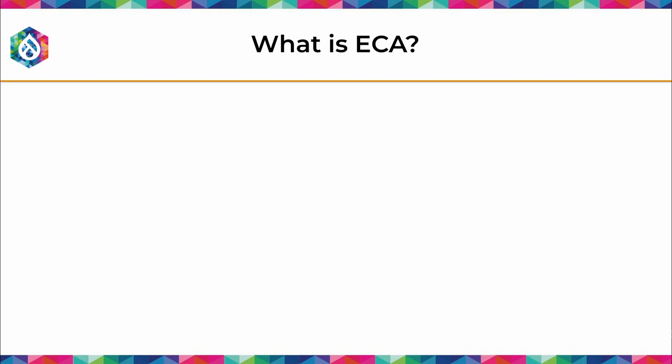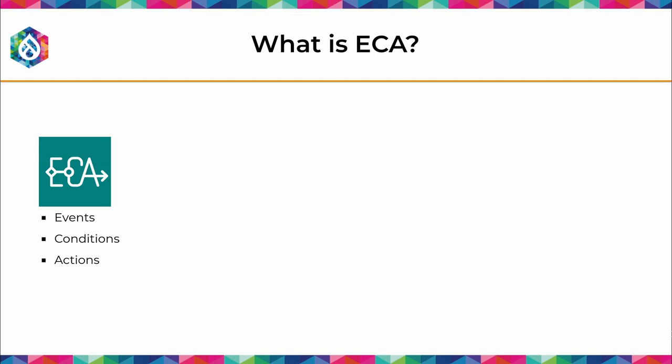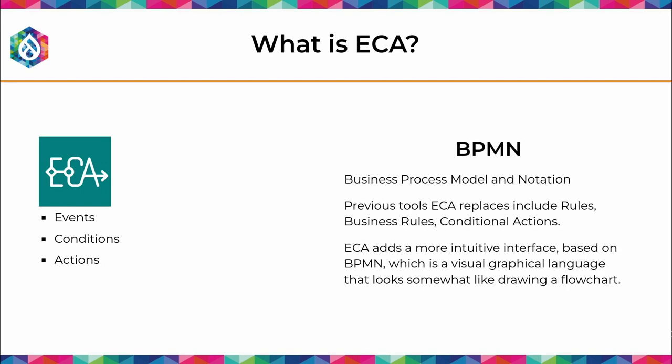So first off, what is ECA? ECA is kind of the replacement for Rules — that's how we think about it, and after talking with Juergen, that was exactly the motivation. It stands for Events, Conditions, Actions. Unlike Rules, it has a graphical visual interface for drawing things. There's also a more old-school interface similar to Rules. BPMN — Business Process Model Notation — is used by projects beyond ECA and comes from the broader community, with other software packages adopting it as a modeling tool.